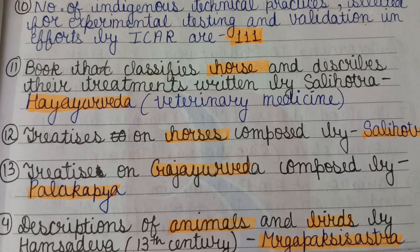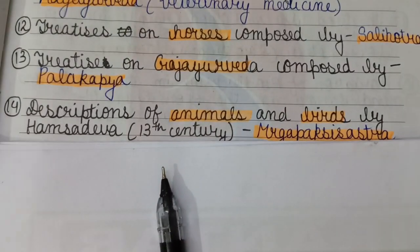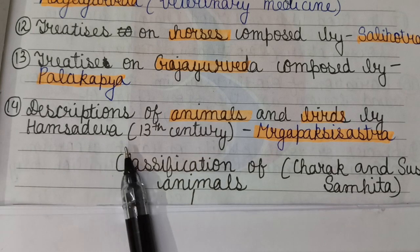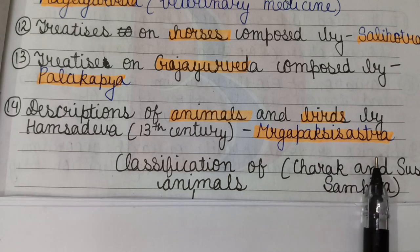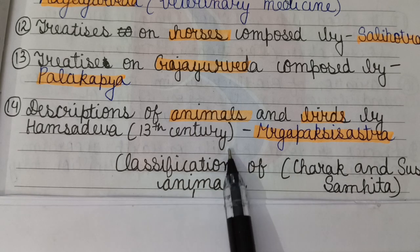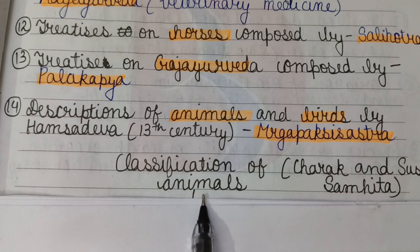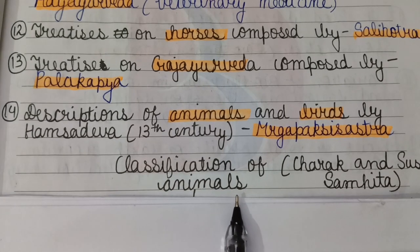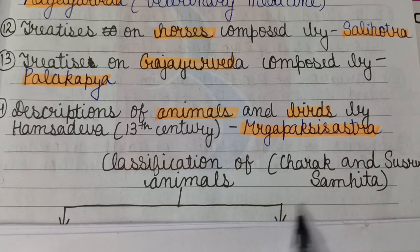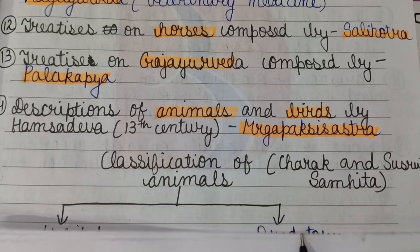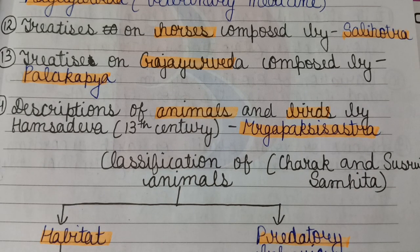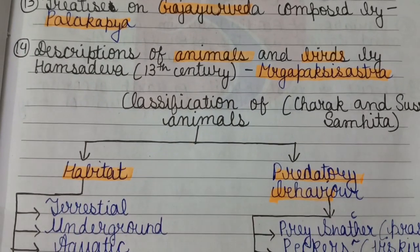The description of animals and birds by Hamsa Deva in the 13th century is known as Mrigapakshi Shastra. Further classification of animals was done by Charaka and Sushruta Samhita, on the basis of habitat and predatory behavior.